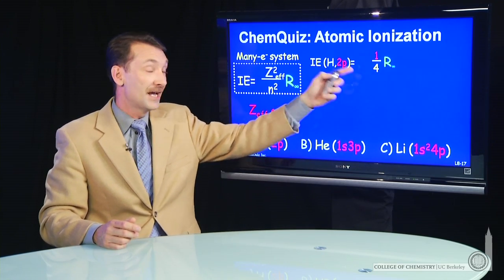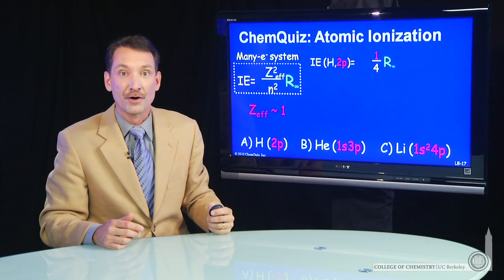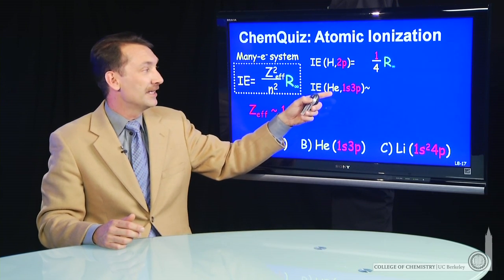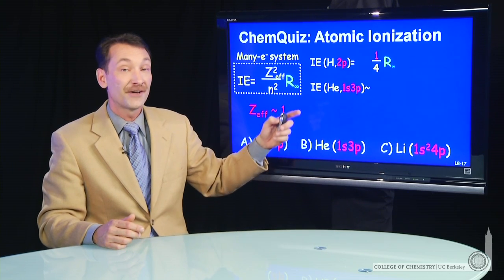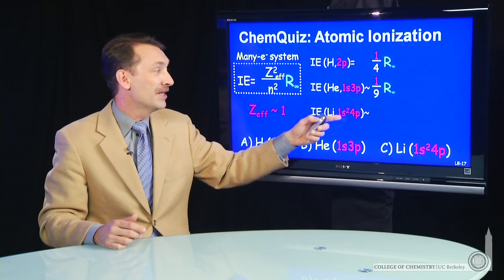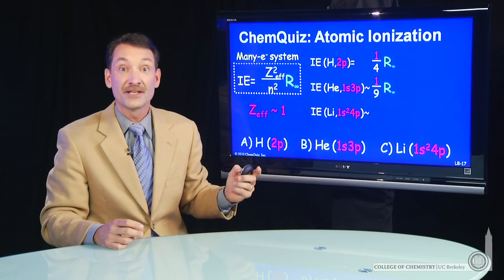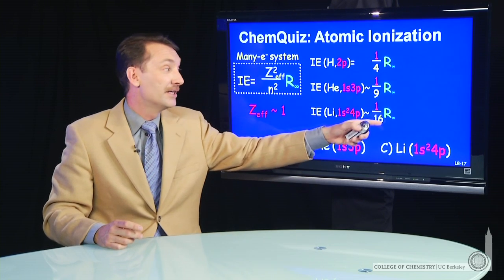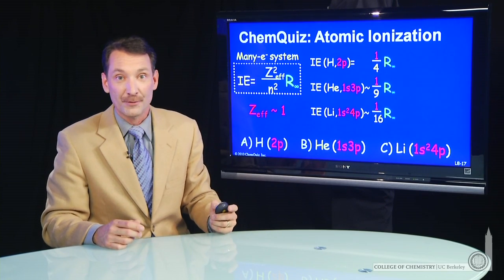Hydrogen in the 2p state, its ionization energy is still a quarter of a Rydberg. Helium in the 3p state, effective nuclear charge about one, gives you about a ninth of a Rydberg. And then lithium in the 4p state, effective nuclear charge about one, gives you a sixteenth of a Rydberg.